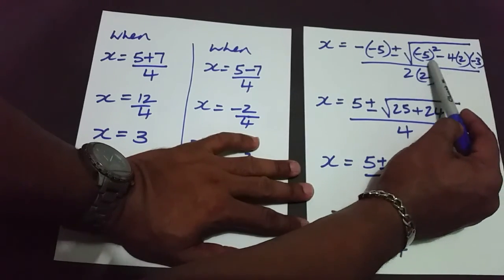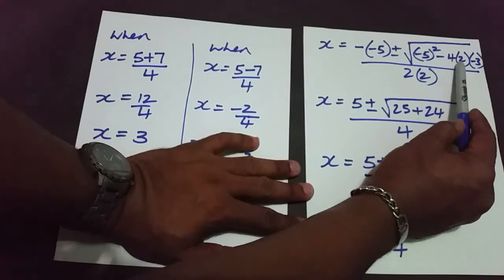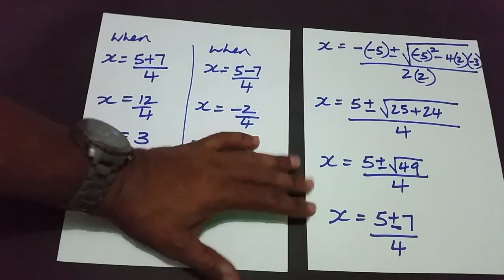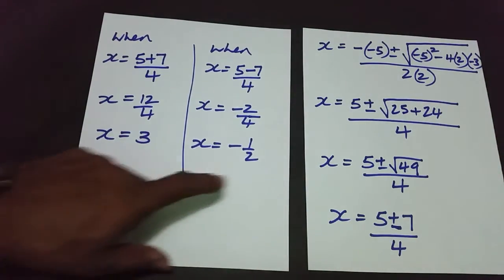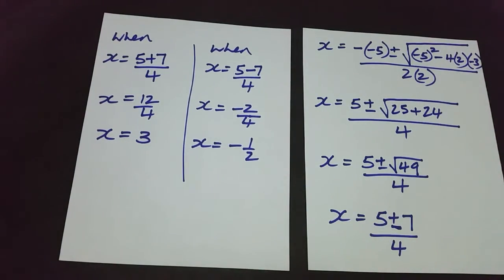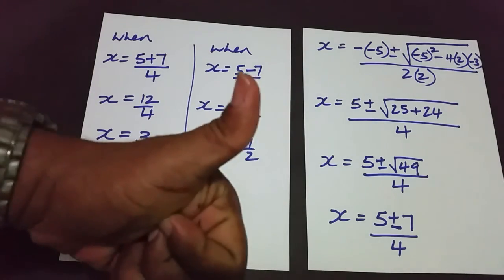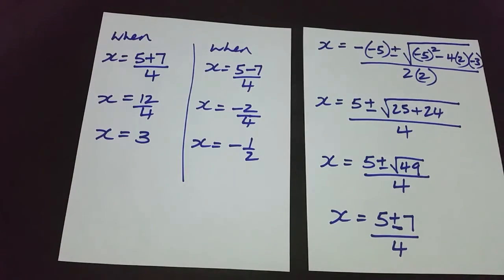Be careful with the signs when multiplying three numbers, and once you proceed carefully you're going to end up with the two answers. I hope you guys found this video insightful, and I'll see you on the next video.